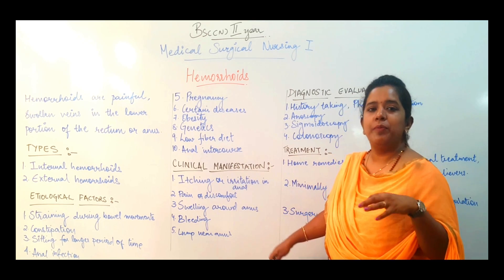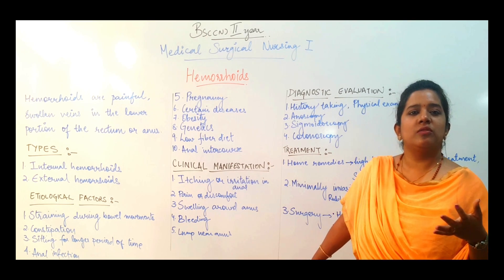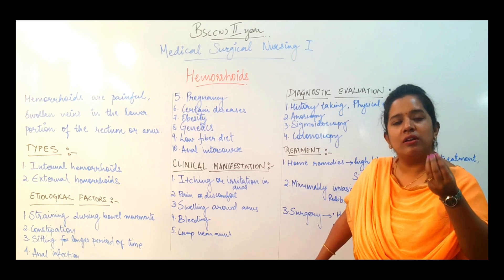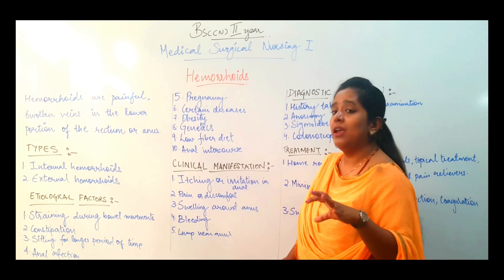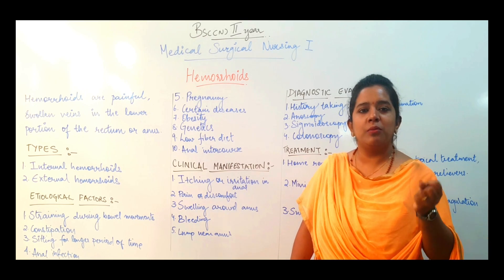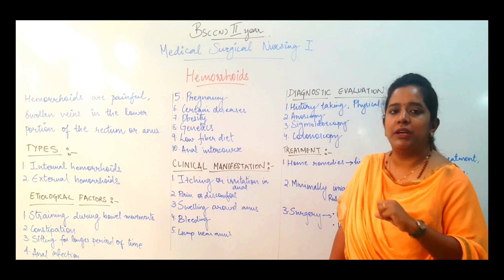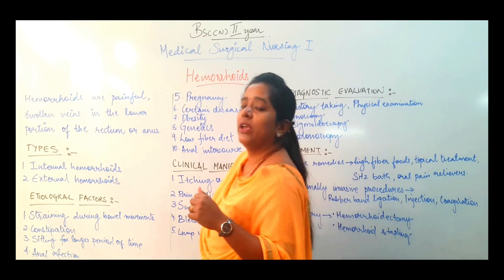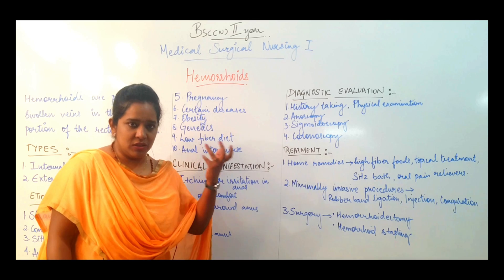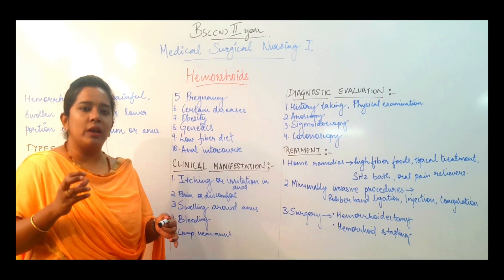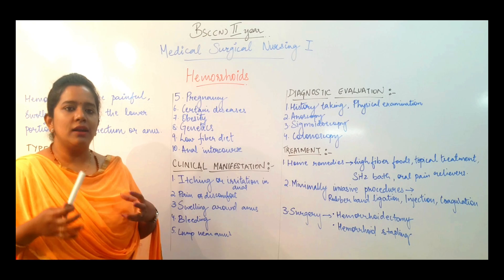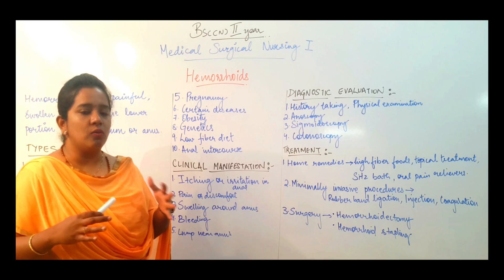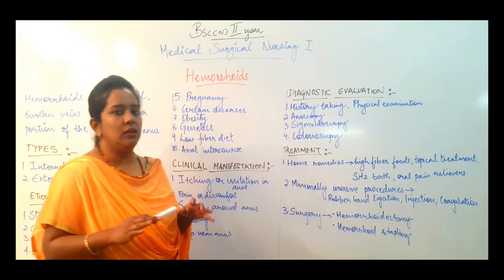There is bleeding. With thrombotic hemorrhoids, blood fills inside the hemorrhoid, and if it is ruptured, bleeding is possible. It can also bleed from friction when feces comes out. In that condition, the anus can develop a lump, which we call a swelling or bulge — a lump that can be seen around or near the anus.